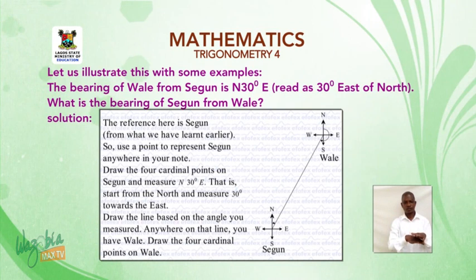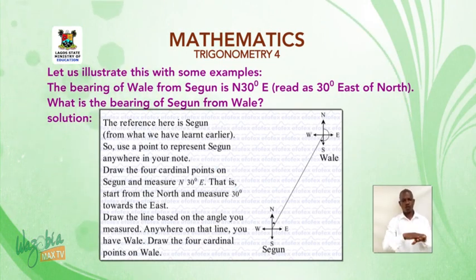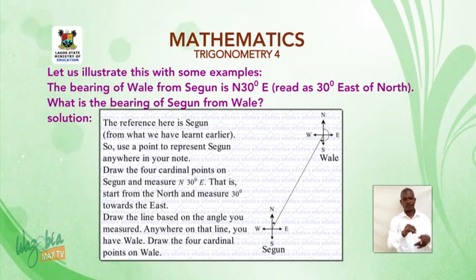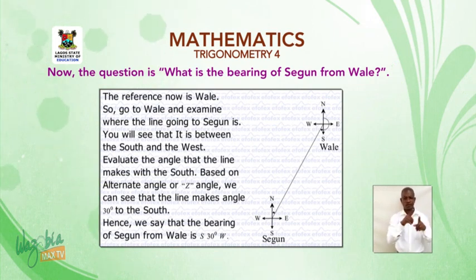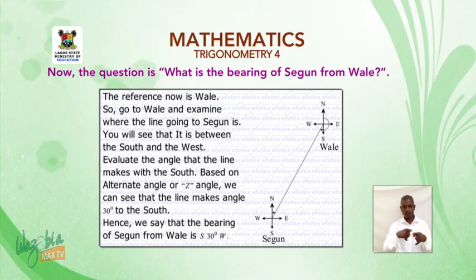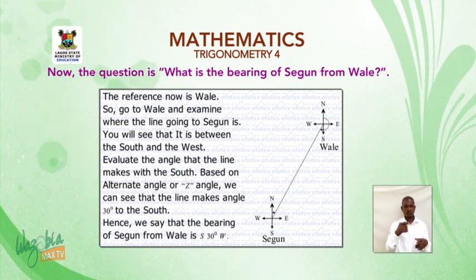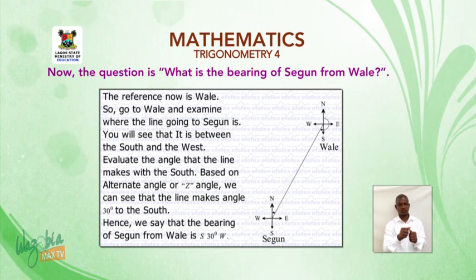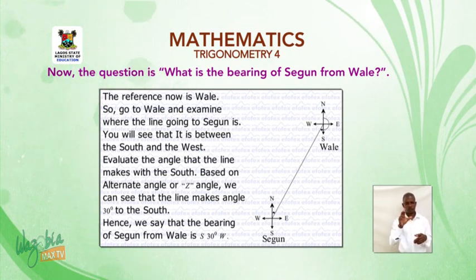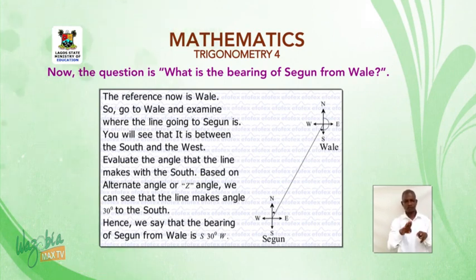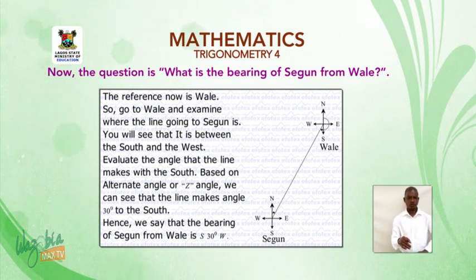Draw a line from Shegu based on the angle you measured. Anywhere on that line you have Wali. Draw the four cardinal points on Wali. Now the question is: what is the bearing of Shegu from Wali? The reference is now Wali. Go to Wali and examine where the line going to Shegu is — you will see that it is between the south and west. Evaluate the angle that the line makes with the south. Based on alternate angles or Z-angles, the line makes 30 degrees to the south. Hence, the bearing of Shegu from Wali is 30 degrees west of south.